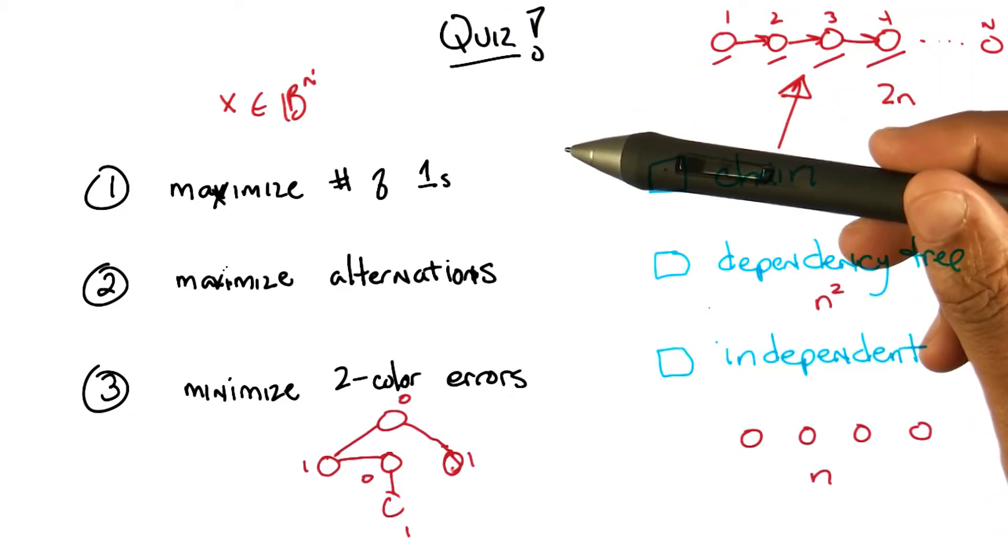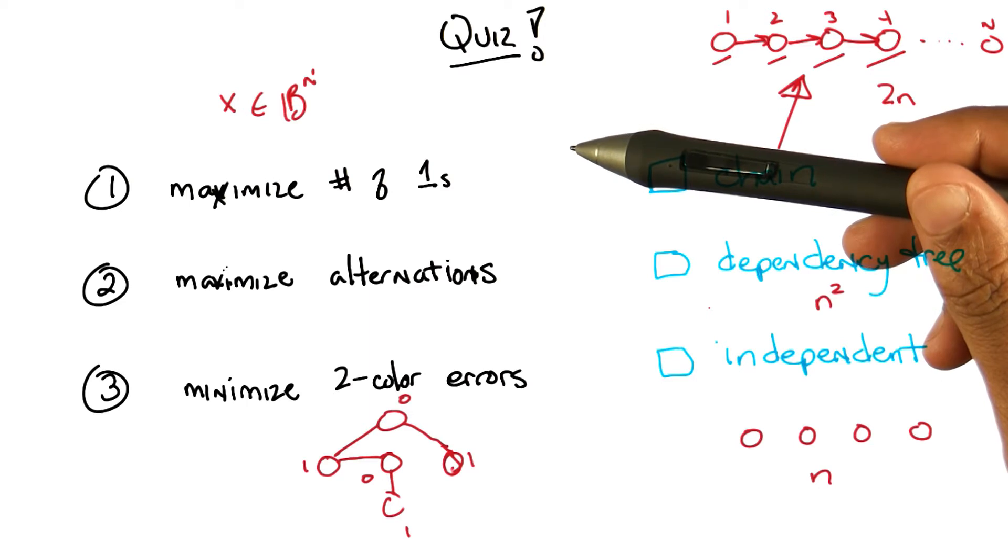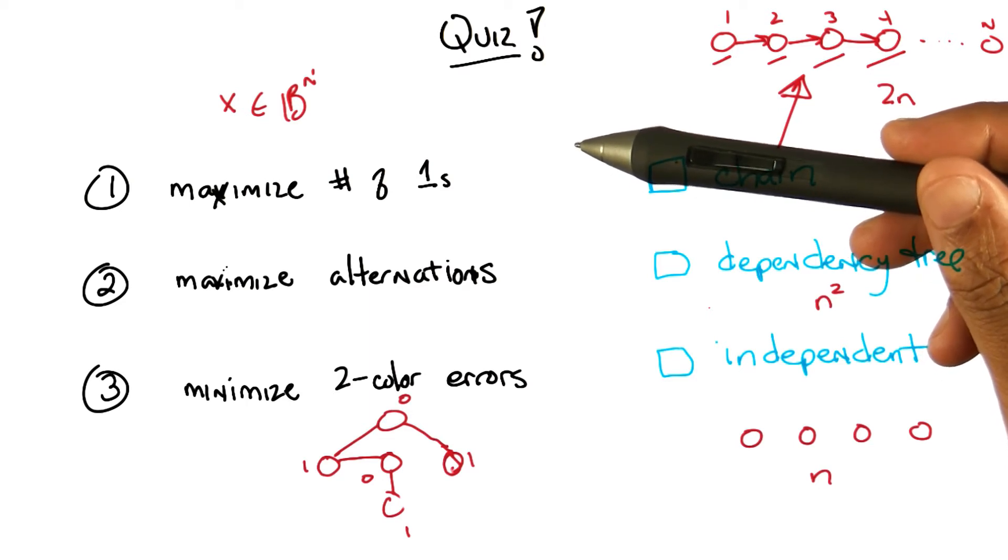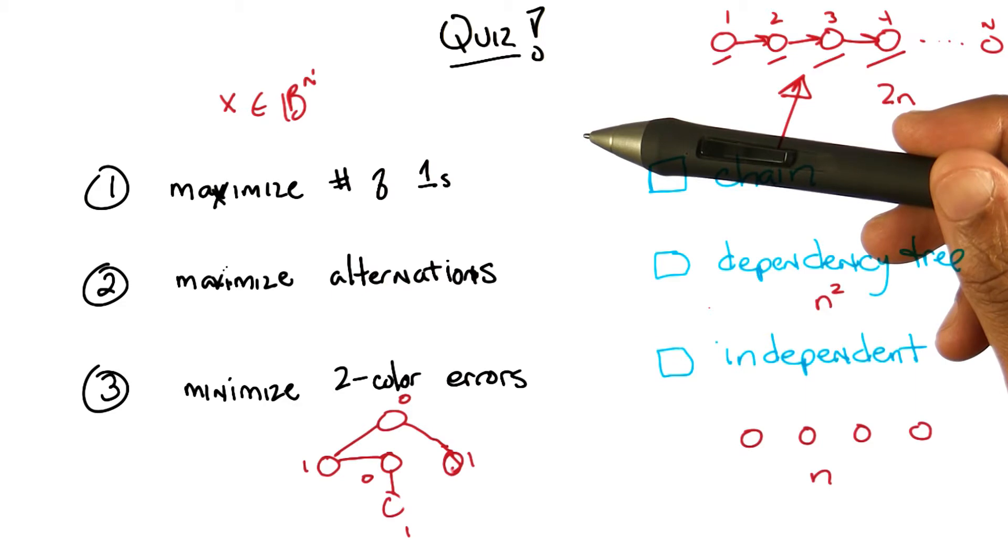So problem one, where you're maximizing the number of ones, to represent the optima here, or the influence of any given bit on the fitness value, they're all independent. They all just contribute whatever they contribute.